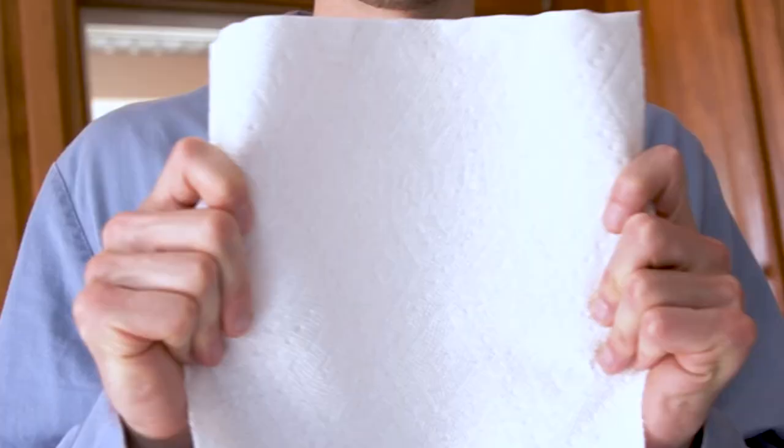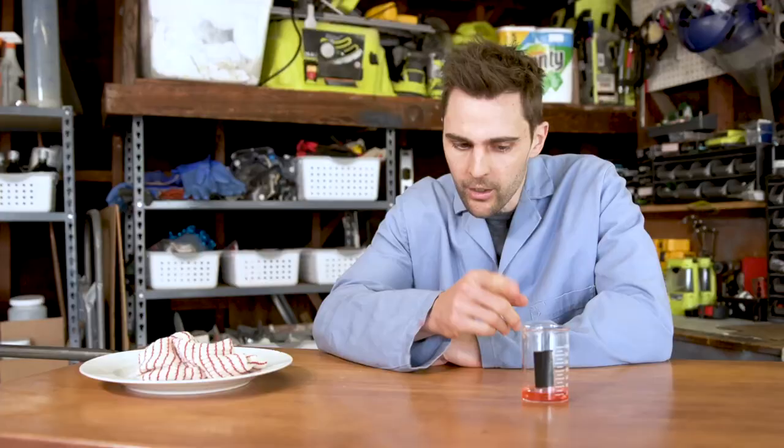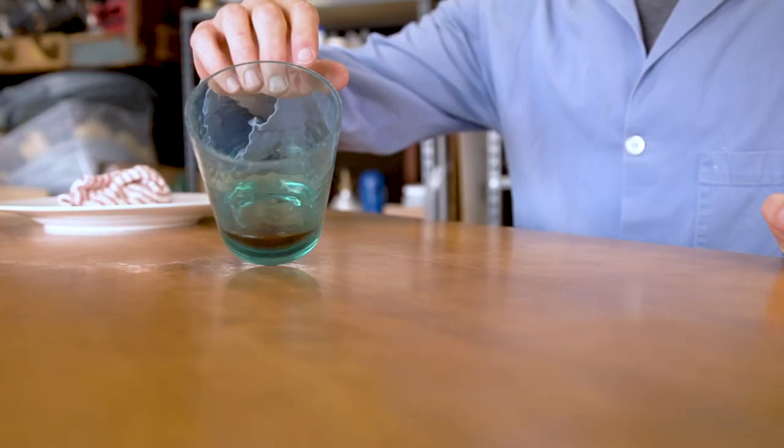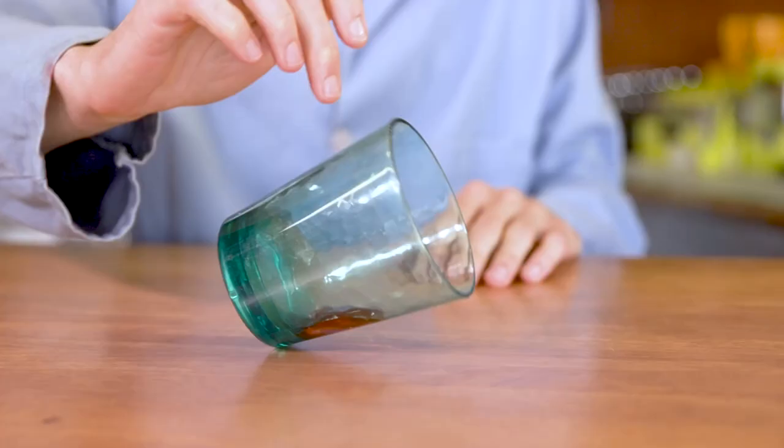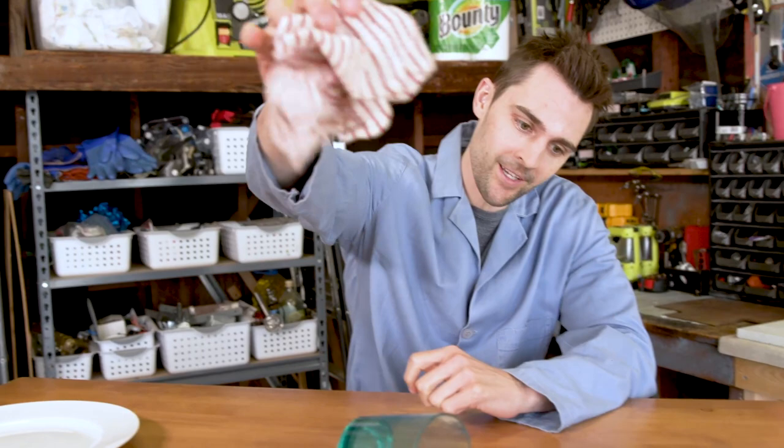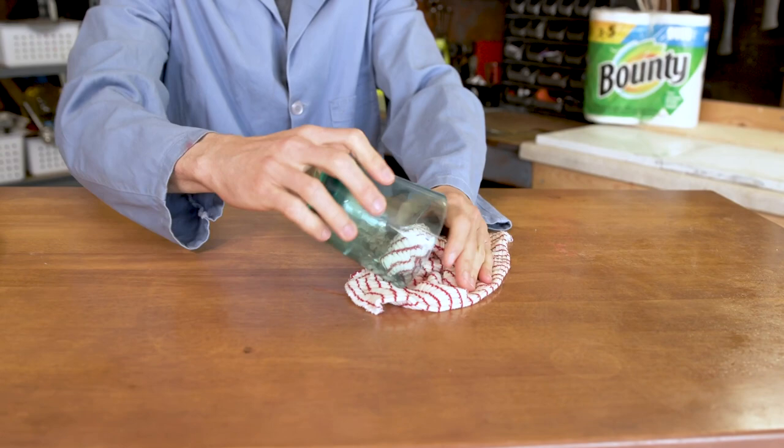Alright, so this is just a regular used dishcloth and when you spill something, you probably do something like this. I'm going to wipe it up like most people do with their used dishcloth. So there's the spill and we reach right for the used dishcloth which is probably right on your sink. You keep doing this for a while and it appears to be clean.